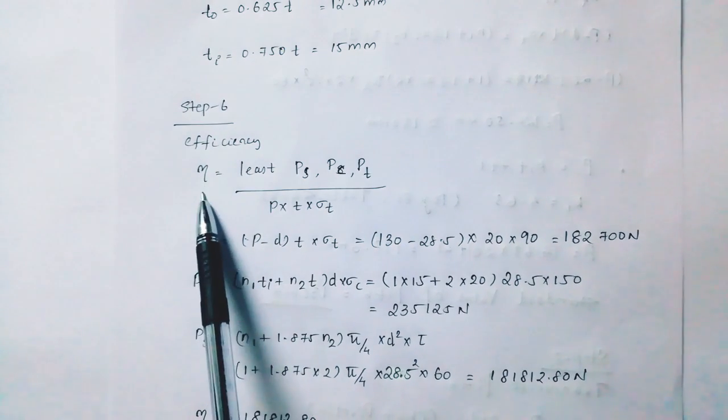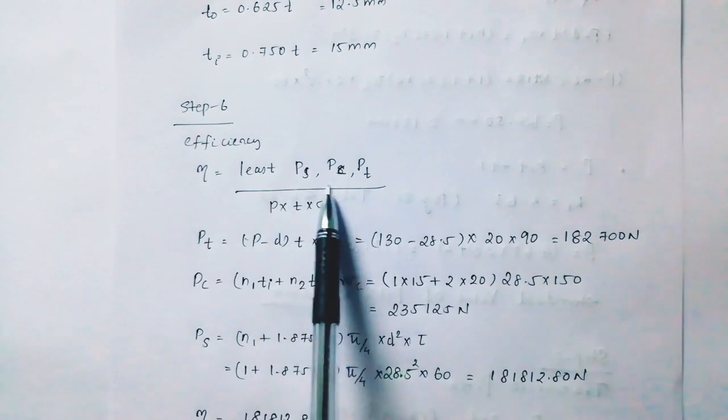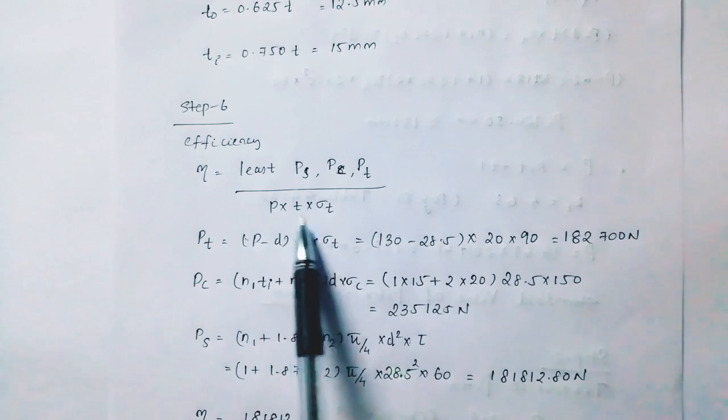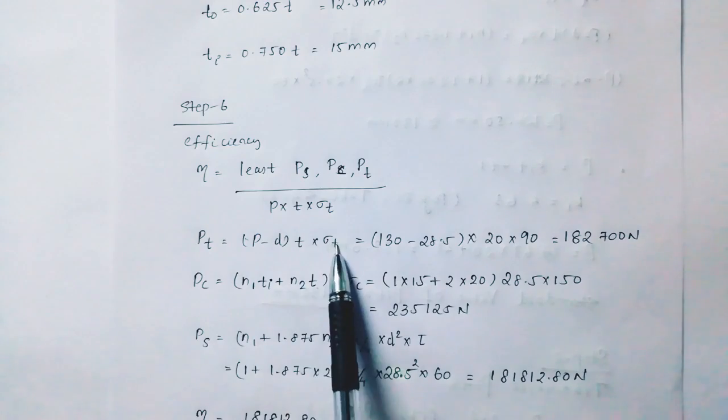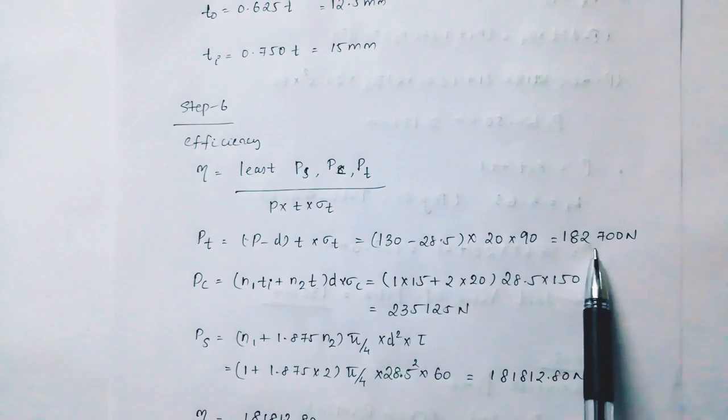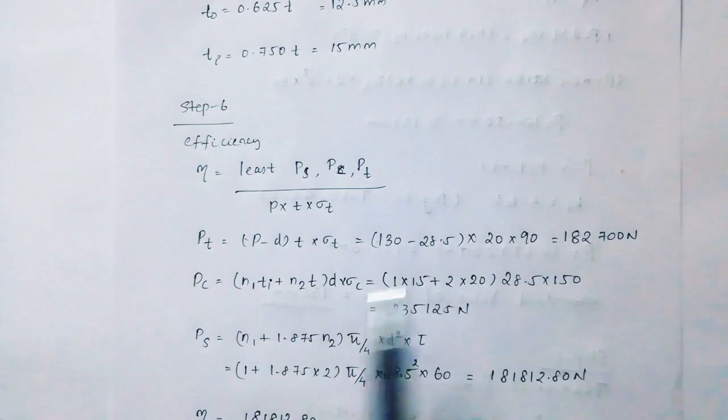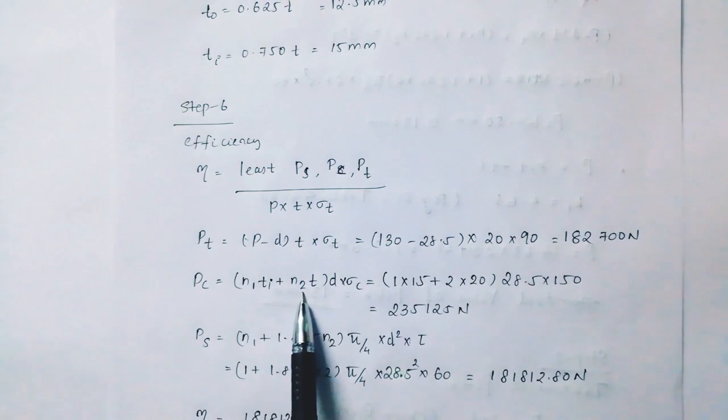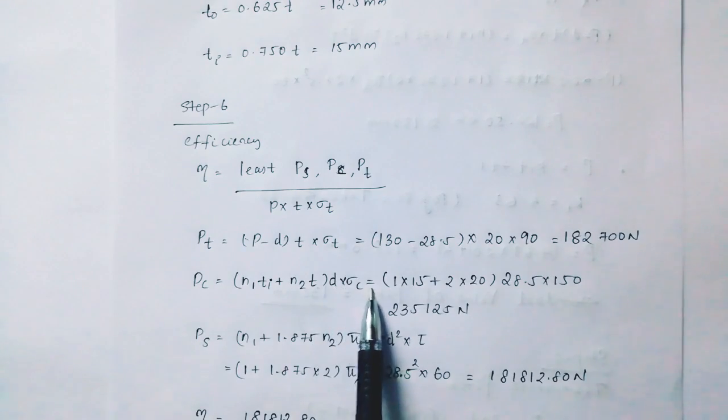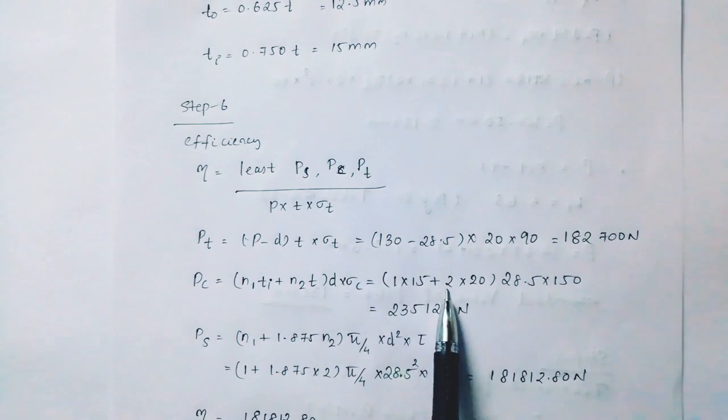Step 6 is the efficiency of the least of ps, pc, and pt. pt is p minus d into t into sigma t, which equals 182,700 Newtons. pc is n1t1 plus n2t into d into sigma c, substituting values gives 235,159 Newtons.